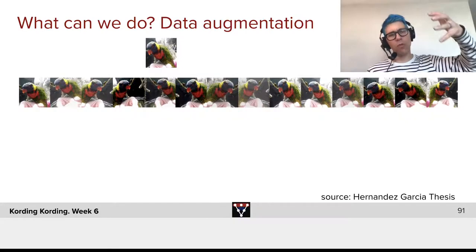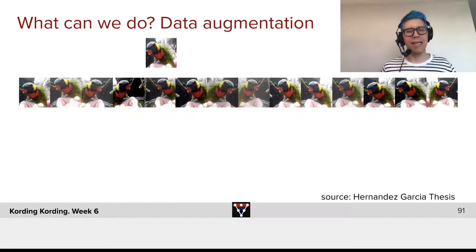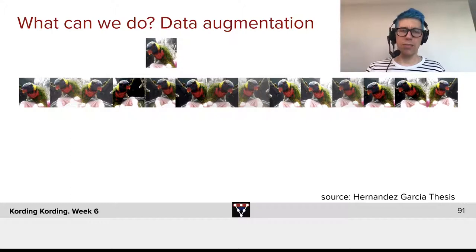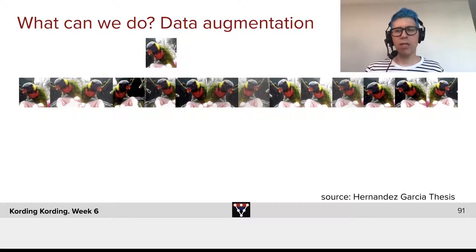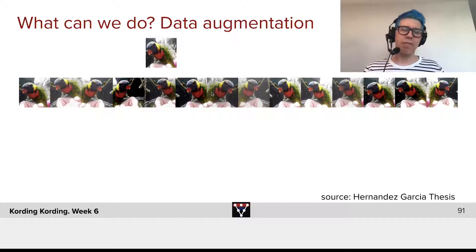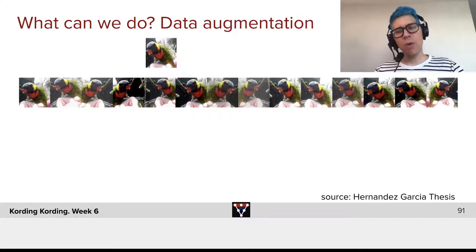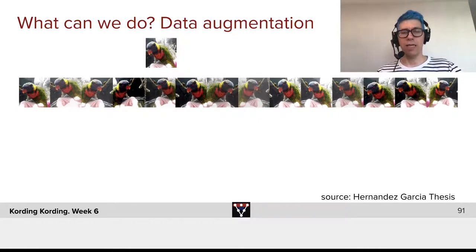The bird will be the same if we crop it slightly differently. The image will also be the same if we slightly change brightness or saturation. On the top you see the potential original image, and at the bottom you see all kinds of minor changes to the image that would leave the meaning of the image the same. This is one way of thinking about it.